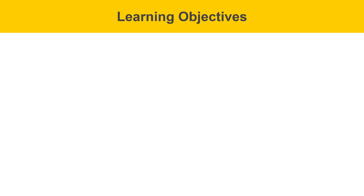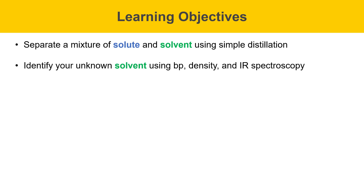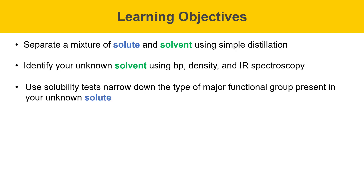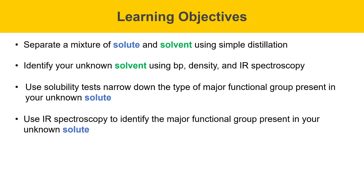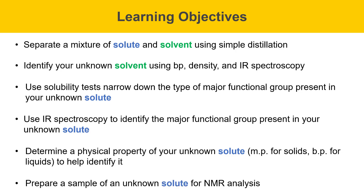This slide has some learning objectives for the experiment. After this experiment, you will be able to: separate a mixture of solute and solvent using simple distillation; identify your unknown solvent using boiling point, density, and IR spectroscopy; use solubility tests to narrow down the type of major functional group in your unknown solute; use IR spectroscopy to identify the major functional group; determine a physical property of your solute — melting point for solids or boiling point for liquids; and prepare a sample of your unknown solute for NMR analysis.